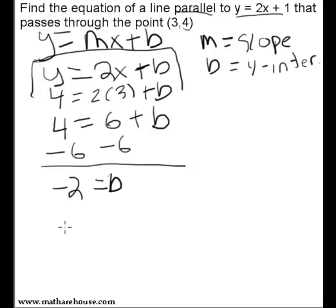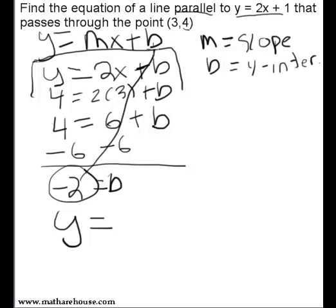So the last step is just to substitute in our negative 2 for b. y equals 2x minus 2.